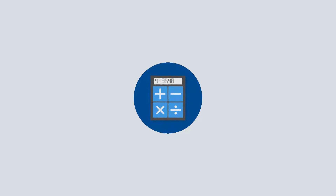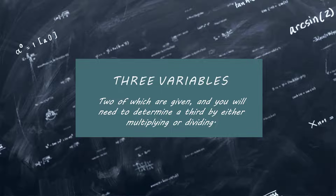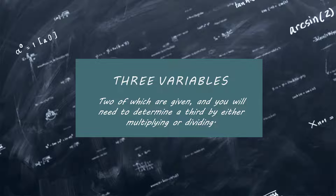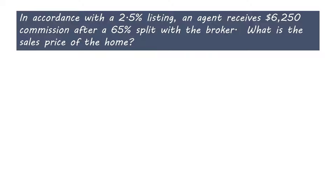In a majority of real estate math questions you'll face, you're likely to have three variables, two of which are given, and you will need to determine the third by either multiplying or dividing. Today, we'll review three questions. The first question is: in accordance with a 2.5% listing, an agent receives $6,250 commission after a 65% split with a broker. What was the sales price of the home?